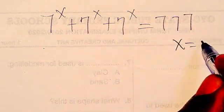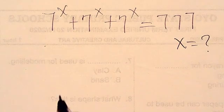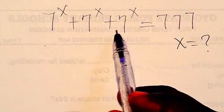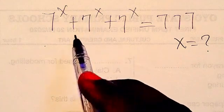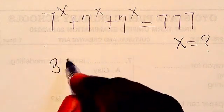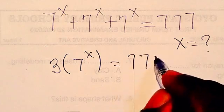So we want to know what the value of x is. From here, what we are going to do is consider 7^x + 7^x + 7^x. We are having 3 times 7^x here, so this is thrice. This is going to be 3 multiplied by 7^x equals 777.